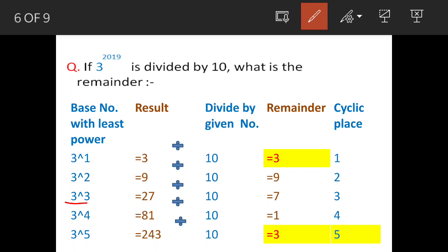3 cubed is 27 divided by 10, we get 7. 3 to the power 4 is 81 divided by 10, you get remainder 1.